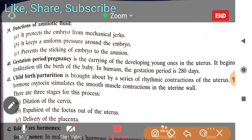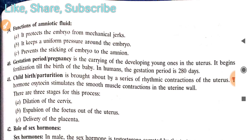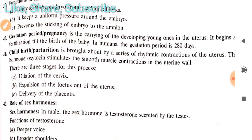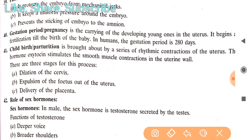Gestation is the carrying of the developing young one in the uterus, from fertilization until birth of the baby. In humans, this gestation period is 280 days — you have to remember this.